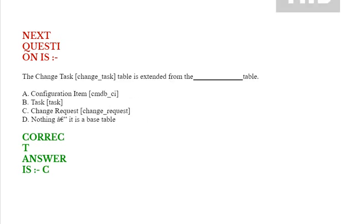Next question: The change task (change_task) table is extended from which table? Option A: configuration item (cmdb_ci). Option B: task (task). Option C: change request (change_request). Option D: nothing — it is a base table. Correct answer is option C.